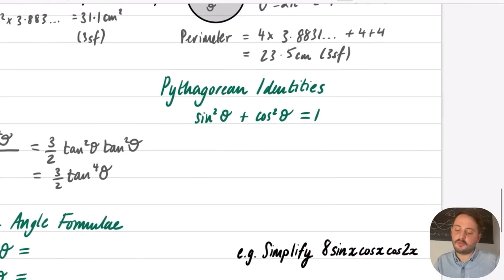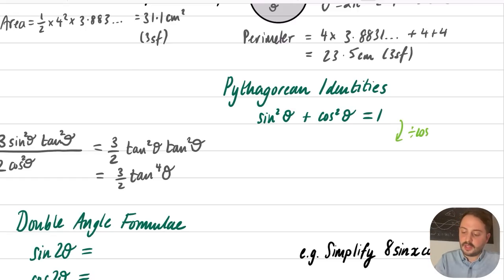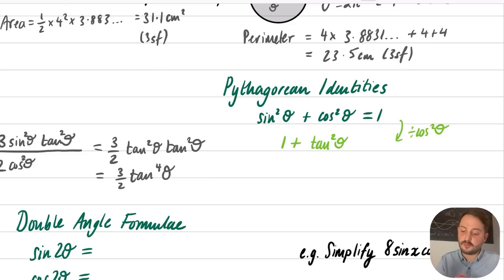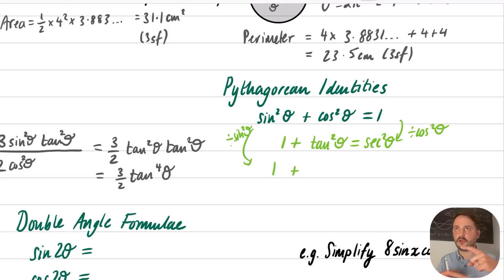The Pythagorean identities extend sin²θ + cos²θ = 1. Dividing through by cos²θ gives tan²θ + 1 = sec²θ. Dividing through by sin²θ gives 1 + cot²θ = cosec²θ. These are called the Pythagorean identities because they derive from Pythagoras's theorem.